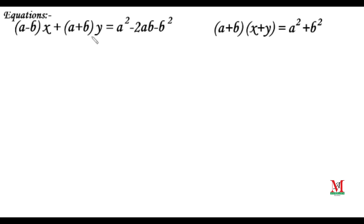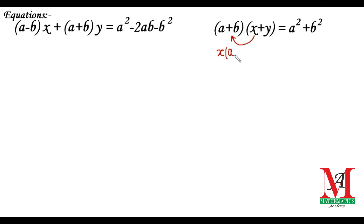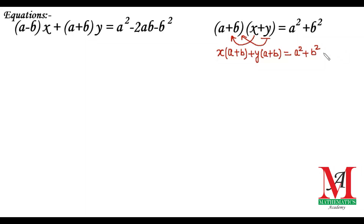In this question we see that the coefficients of x and y are not numerical. To solve such a question we need the help of the cross multiplication method. In this equation x and y are combined, so to find the coefficients we need to separate them — we multiply x with (a + b) to get x(a + b), and similarly y with (a + b) to get y(a + b) equals a² + b². Let this be equation number one and equation number two.